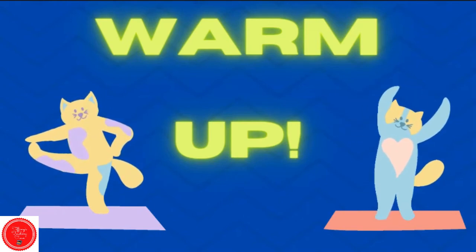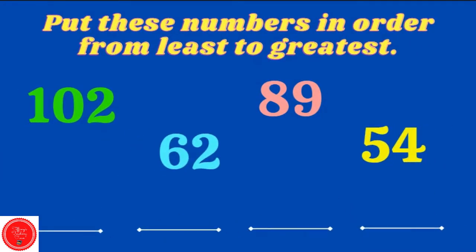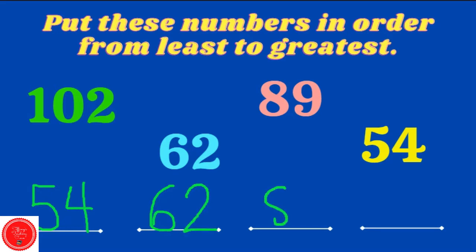Let's start with a warm-up. Put these numbers in order from least to greatest. So we want to start with the smaller number. Which number is the smallest? Fifty-four. What comes next? Sixty-two. Eighty-nine. And then the greatest number is 102.